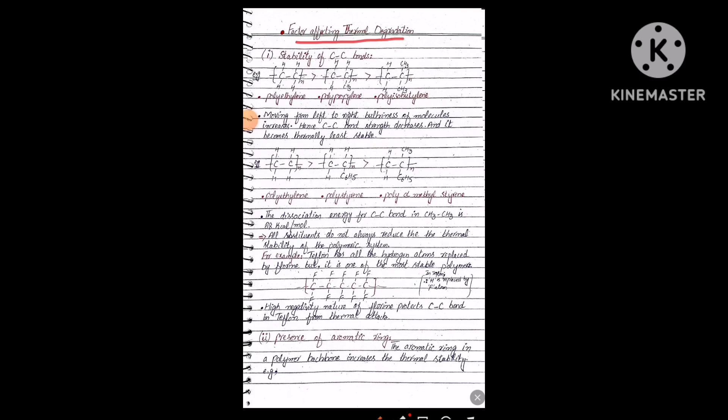There are mainly four factors affecting thermal degradation, which we will discuss one by one. The first factor is the stability of the carbon-carbon bond. Examples include polyethylene, polypropylene, and polyisobutylene. As we move from left to right, the molecular weight of the polymer increases.